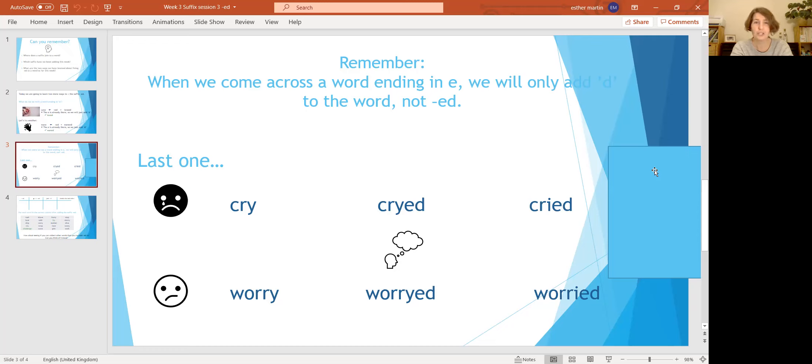But that's not how we add -ed to words ending in 'y'. Can you see in the last column what's changed? Can you pause the video and talk to the person you're with? What's changed about the words in the middle column and in the last column? Okay, let's talk that through. Can you see that one of the letters has changed? I have changed the 'y' into an 'i', and then I've added -ed. And that is our fourth rule. If a word ends in 'y', we change the 'y' to an 'i' before adding -ed.